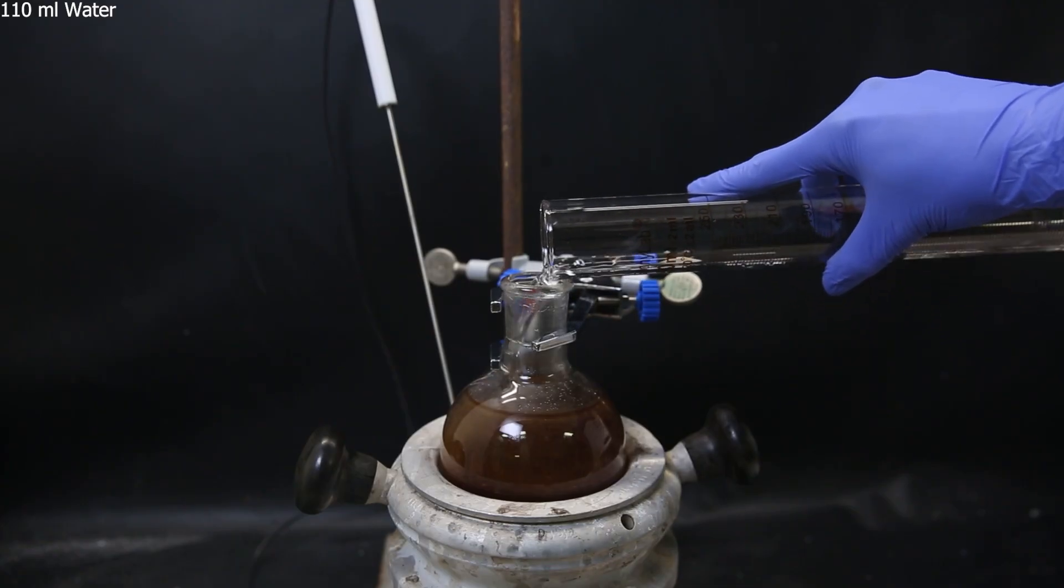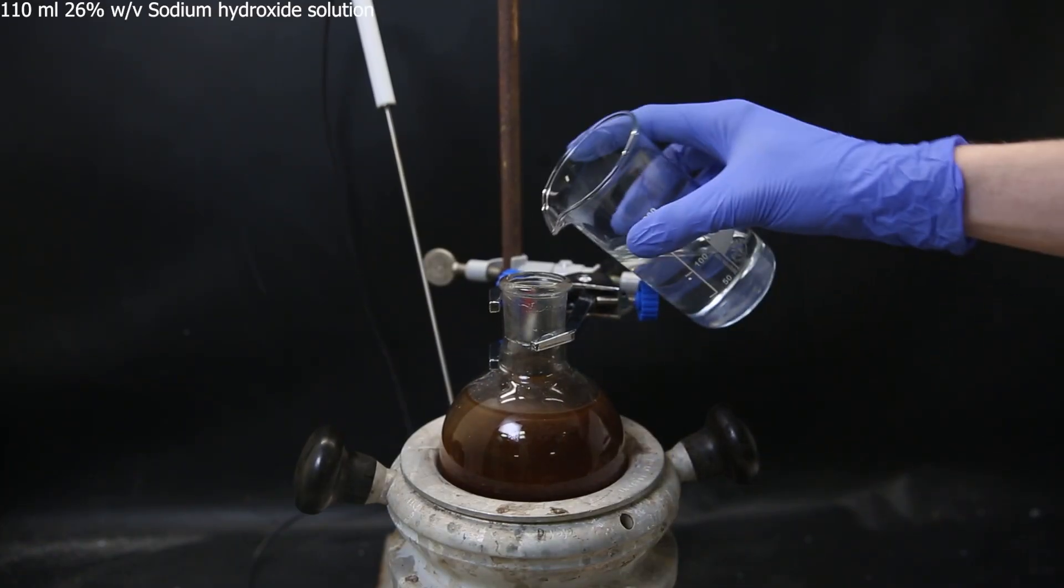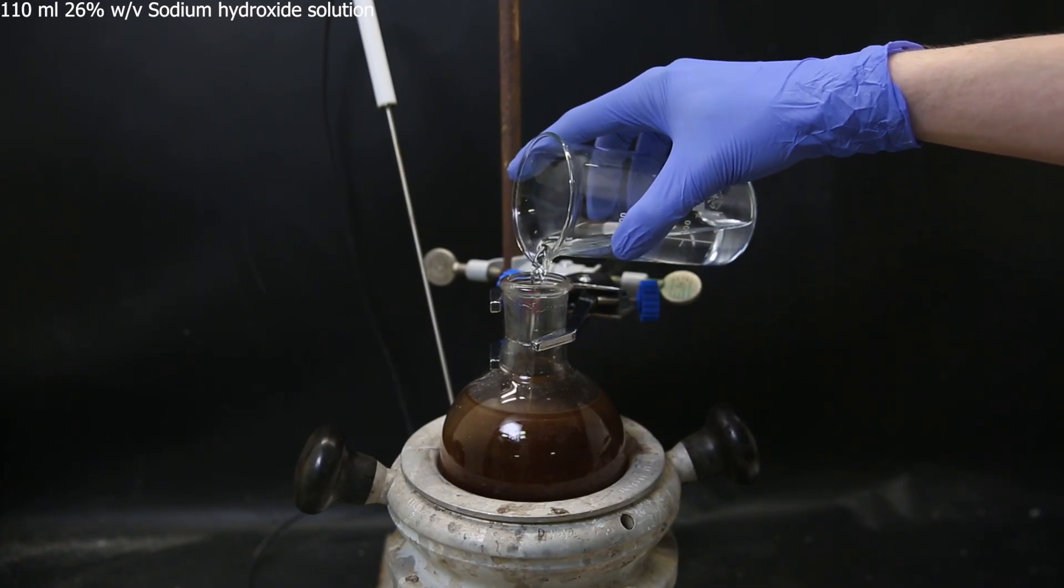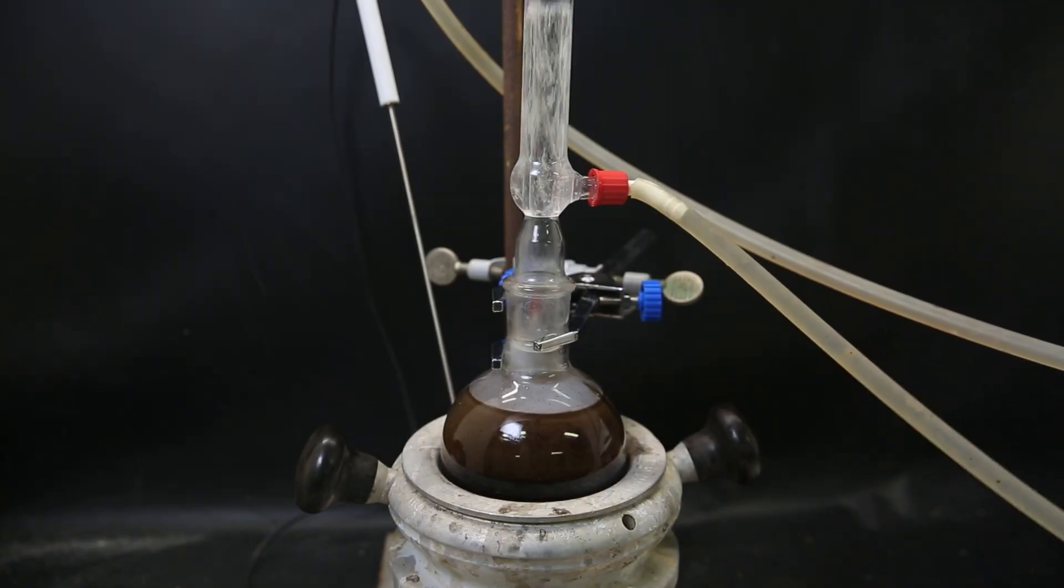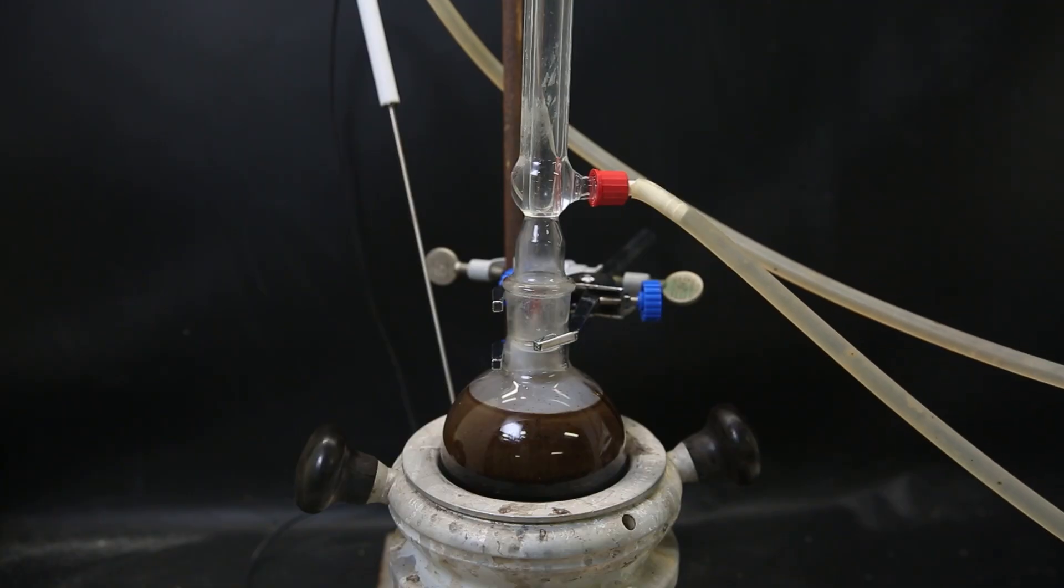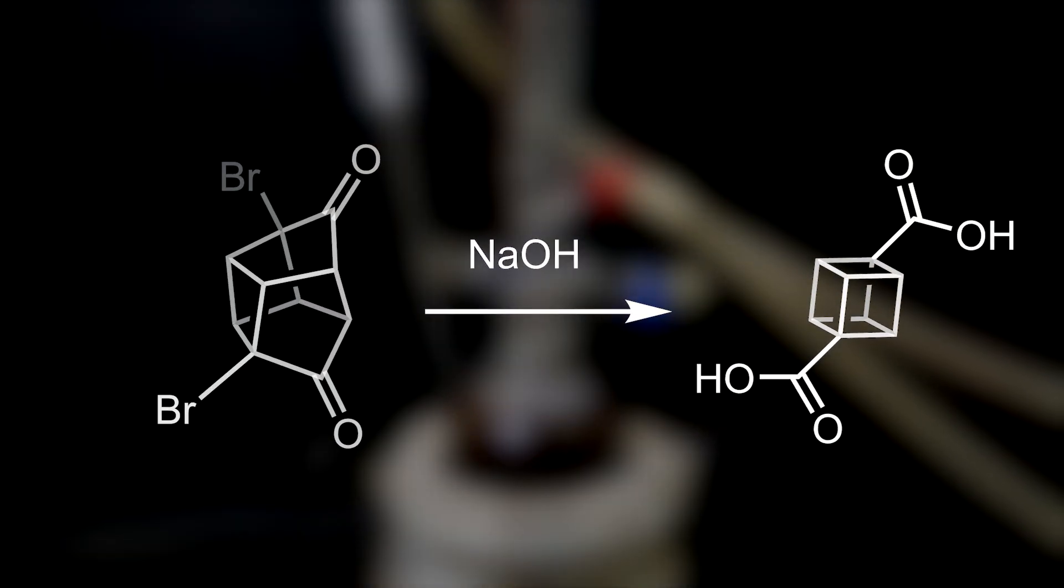I add 110 ml of water and stir to suspend the solid, and then 110 ml of a 26% sodium hydroxide solution. I then attach a reflux condenser and leave it to reflux overnight. In the reaction, the intermediate product reacts with sodium hydroxide and is converted into cubane dicarboxylic acid through a pseudo-Favorski rearrangement, as opposed to a regular Favorski rearrangement. In this case, the hydroxide ion will first directly attack the carbonyl carbon instead of later in the reaction.